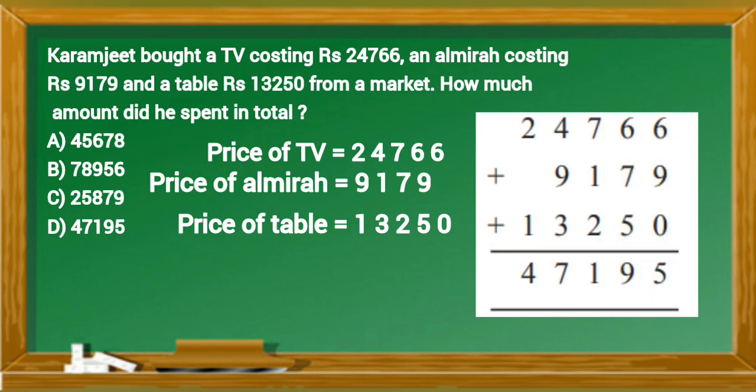By adding all, we can find total amount spent by Karamjit. Total amount spent equals 47,195 rupees. Option D is the correct answer.